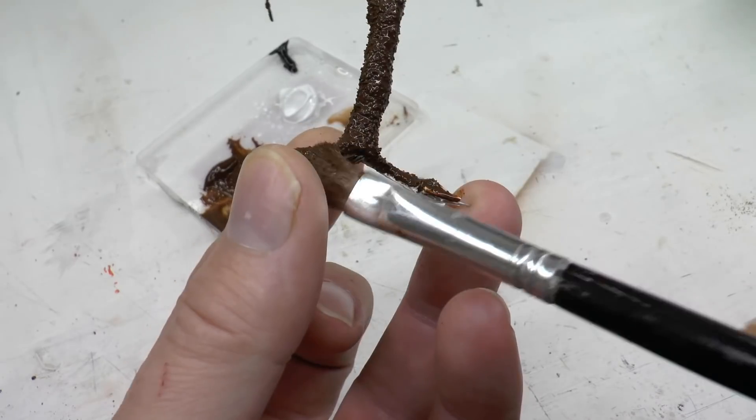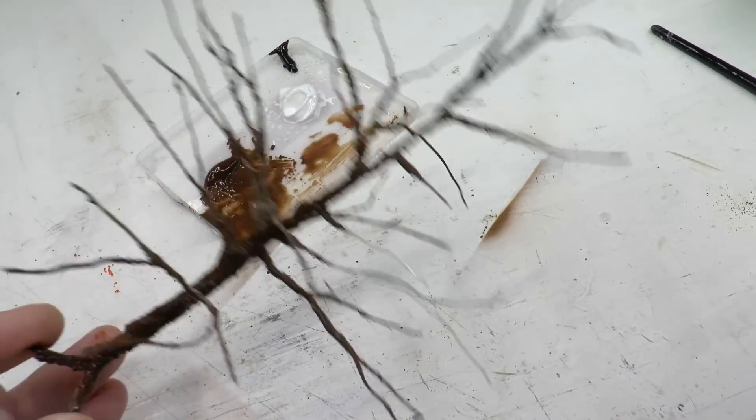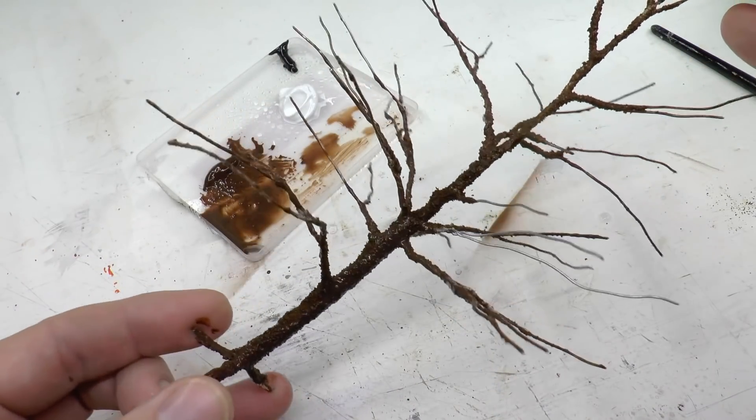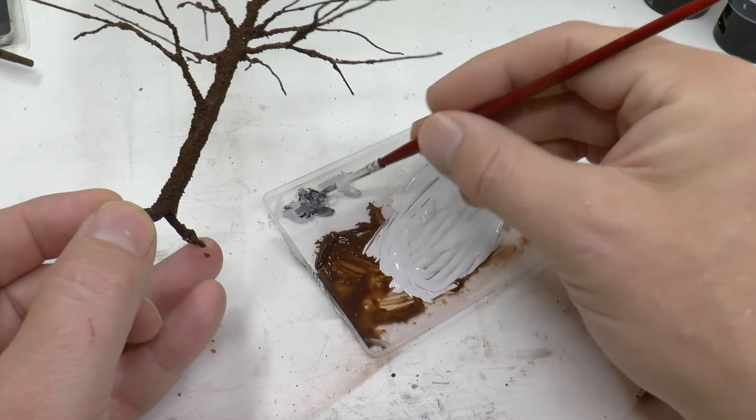I do paint it just in almost the same color as the coffee grounds actually. So it's a kind of dark brown color. So now the entire tree has been covered with that.